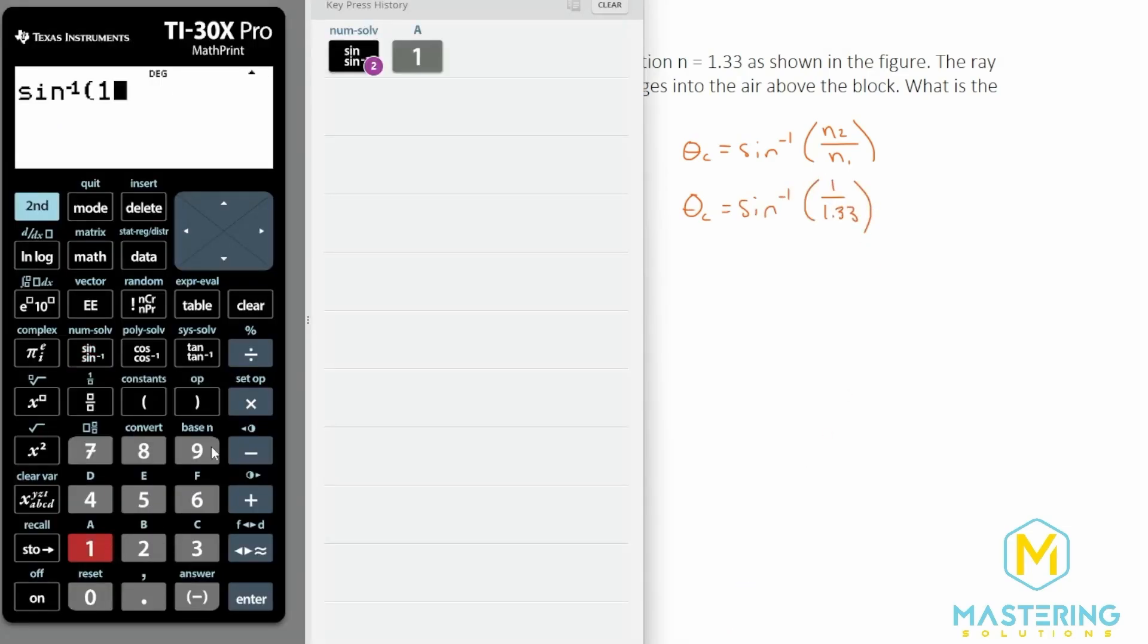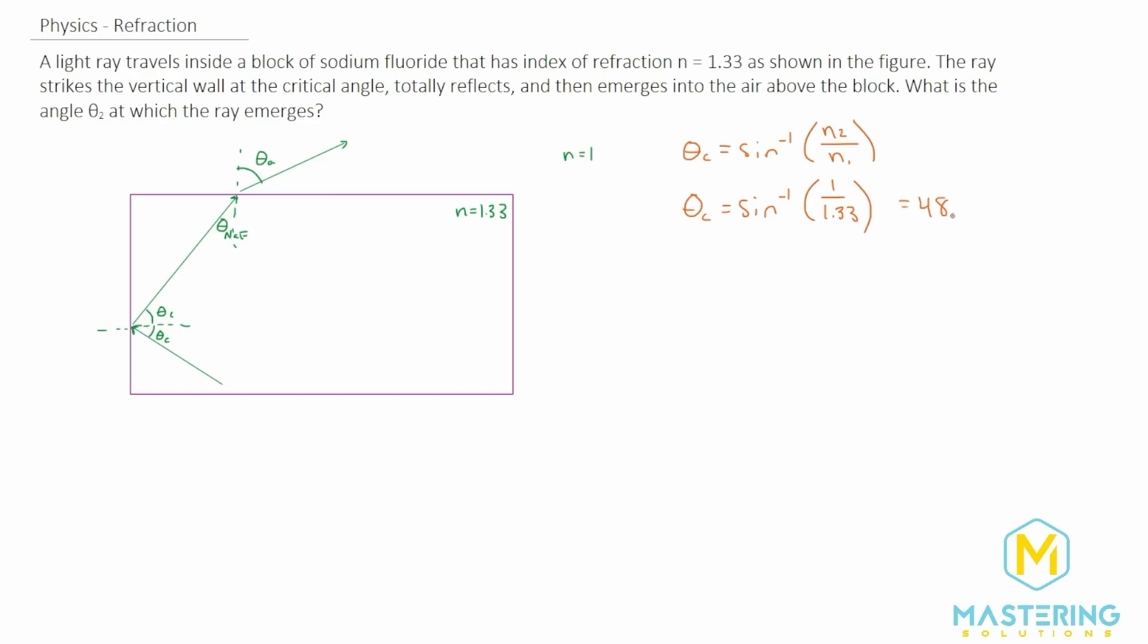Inverse sine one divided by 1.33 gives us an angle of 48.75, 48.75 degrees. So that is this angle here.